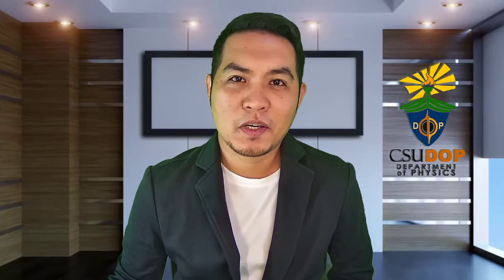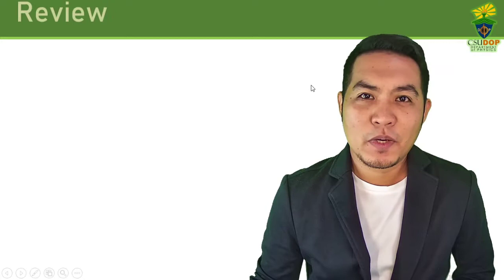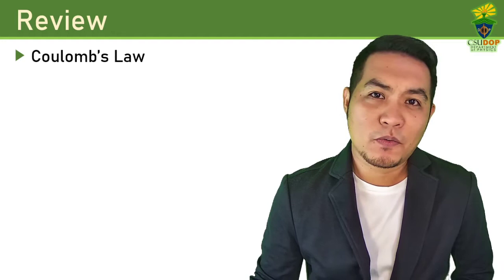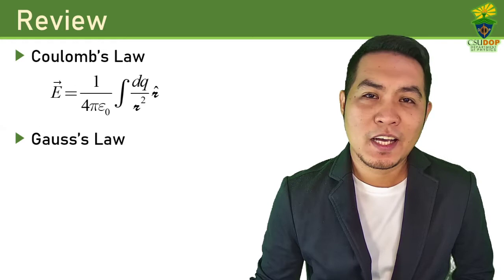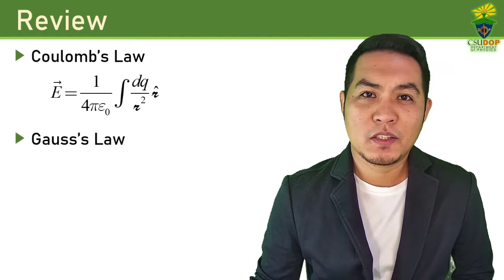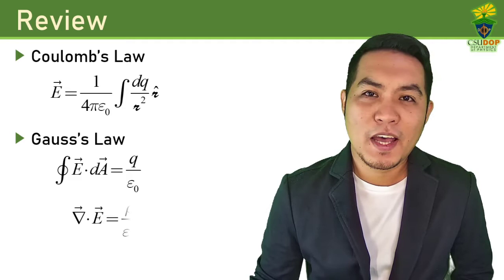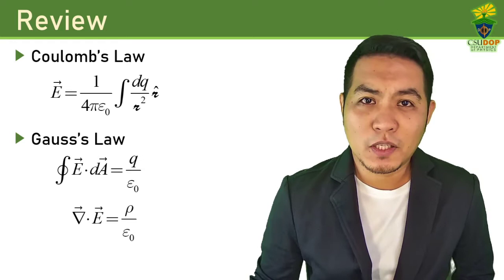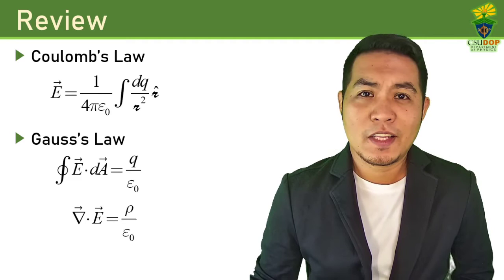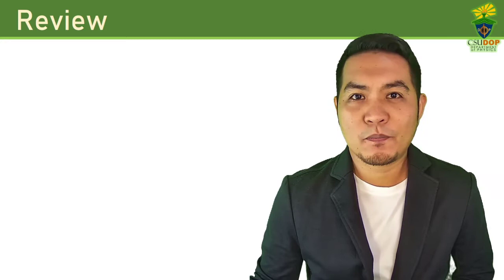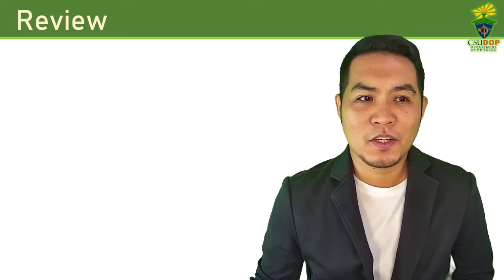Welcome back to Physics 141, Classical Electromagnetism 1. Before we proceed with today's lesson, let us first review some concepts. We have discussed Coulomb's Law as a way to solve for the electric field for continuous charge distributions, and also Gauss' Law as an alternative. Gauss' Law has an integral form and a differential form. The integral form is used to find total charge Q, while the differential form is used to solve for charge density rho.